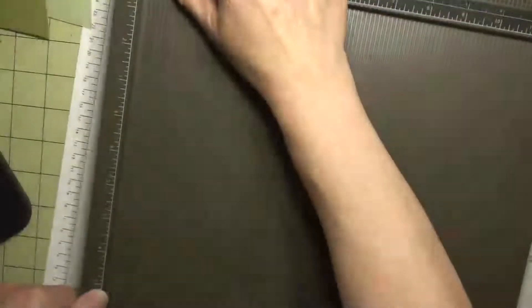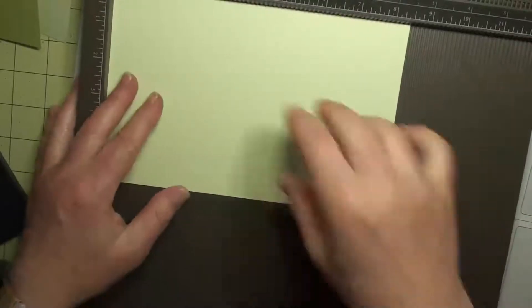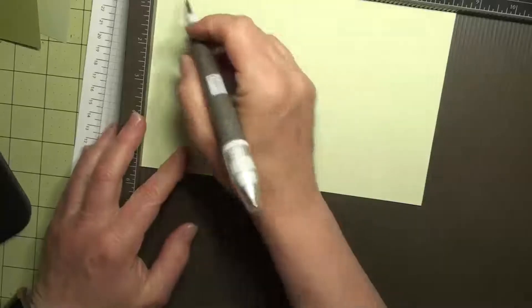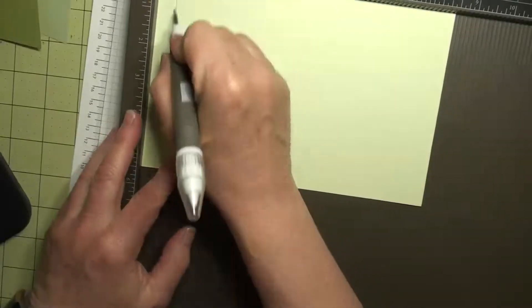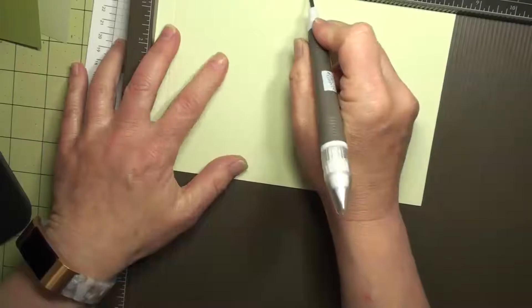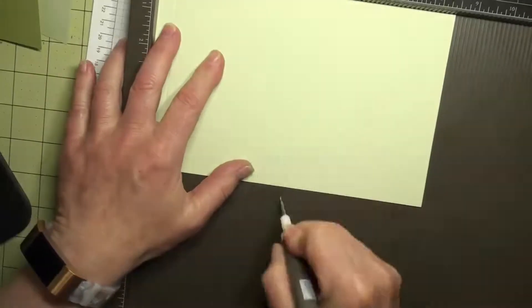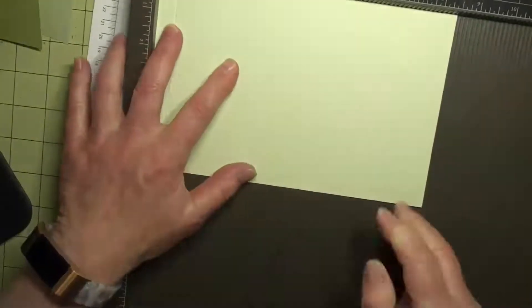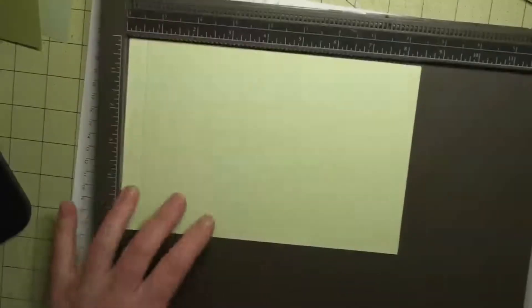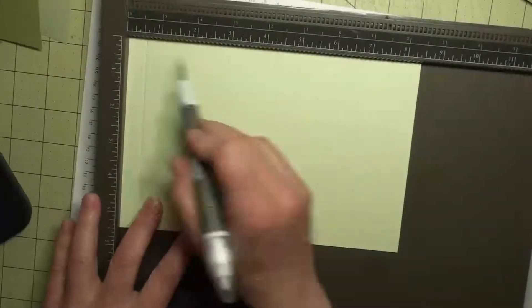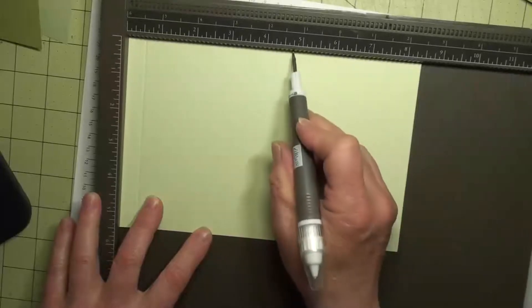Now our scoring on this piece. Okay, so we want to score this piece at a half an inch, at four and a quarter, and four and three quarters. So a half an inch, four and a quarter, and four and three quarters.